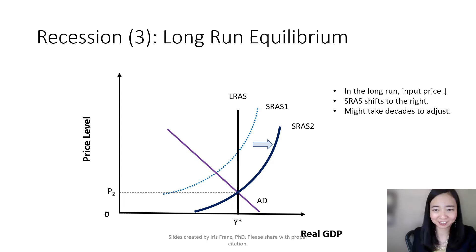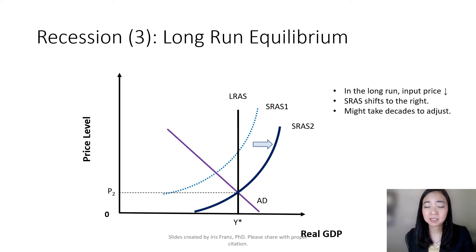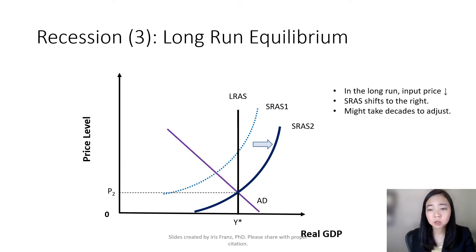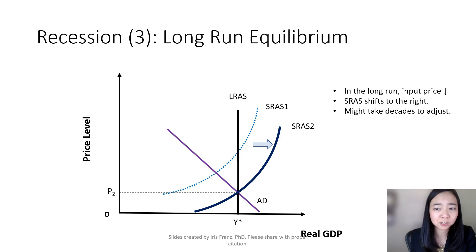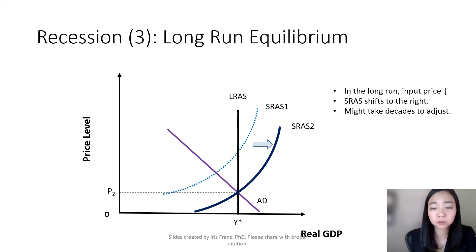So what happened here is this. During a recession, both price level as well as the output goes down. In the long run, our input price is also going to go down. Why is that? Because laborers are losing their jobs, and as a result, laborers are willing to accept a very low wage just to work. So in the long run, firms will say that input price is so low, so it makes sense for me to produce more. Therefore, firms are going to produce more, and that will shift our short-run aggregate supply curve to the right.